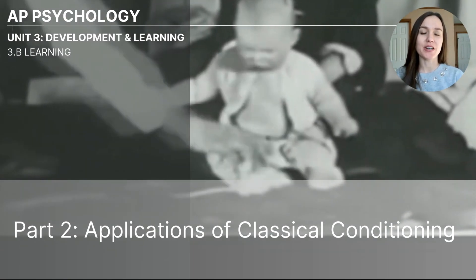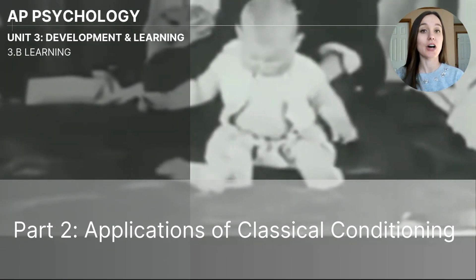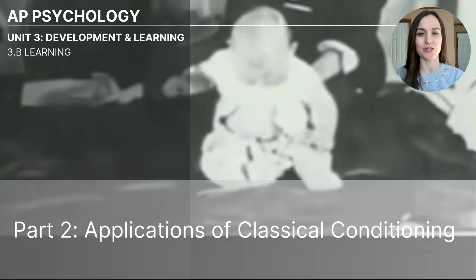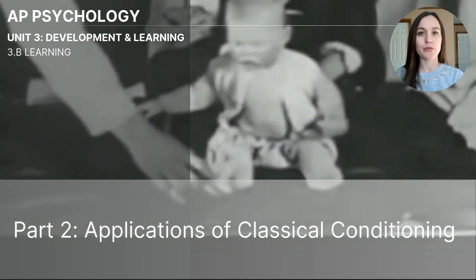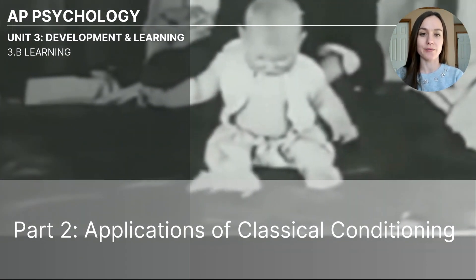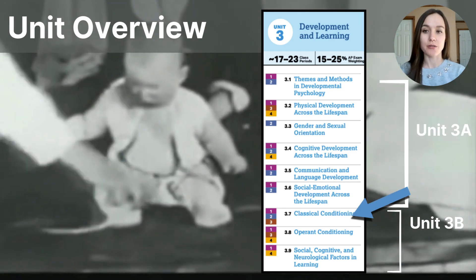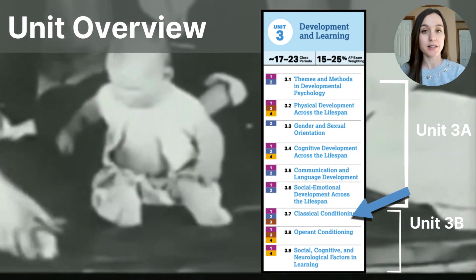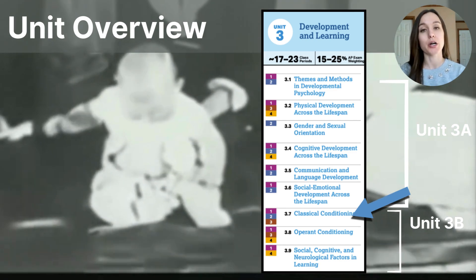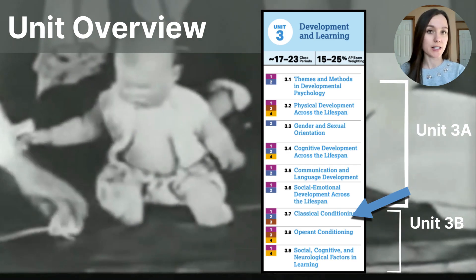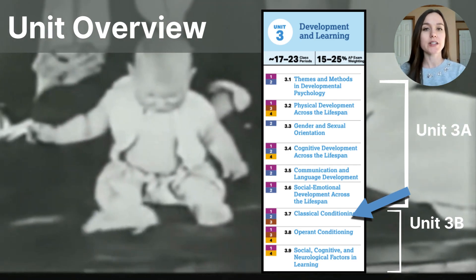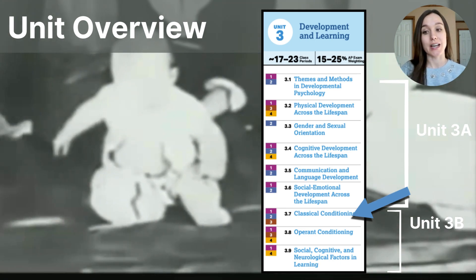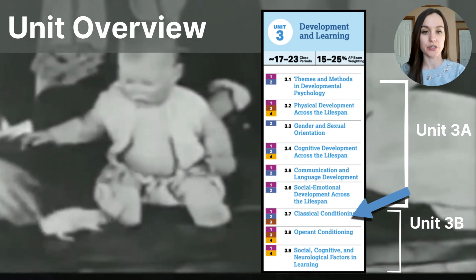Hi everyone. This video is part two of the 3B series on learning in the Unit 3 content for AP Psychology students. This particular video will focus on the applications of classical conditioning. As you can see on the unit outline, we are in the second part of Unit 3 content, which I'm calling Part B. Part B focuses specifically on concepts related to learning, and classical conditioning is listed first. This is the second part of two videos on classical conditioning.